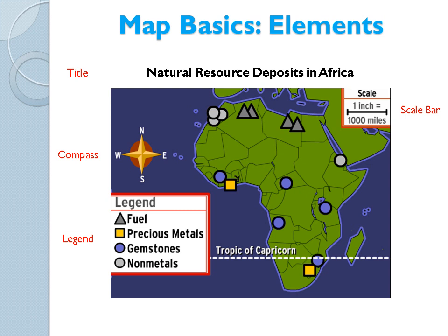First off, let's go over the basic elements of a map. Any good map, no matter how simple, should have these components when possible: a title that explains to the reader what you're looking at, a scale bar that helps them understand the size of what they're looking at, a compass that allows the reader to orient themselves, and a legend that explains what your map is trying to say.